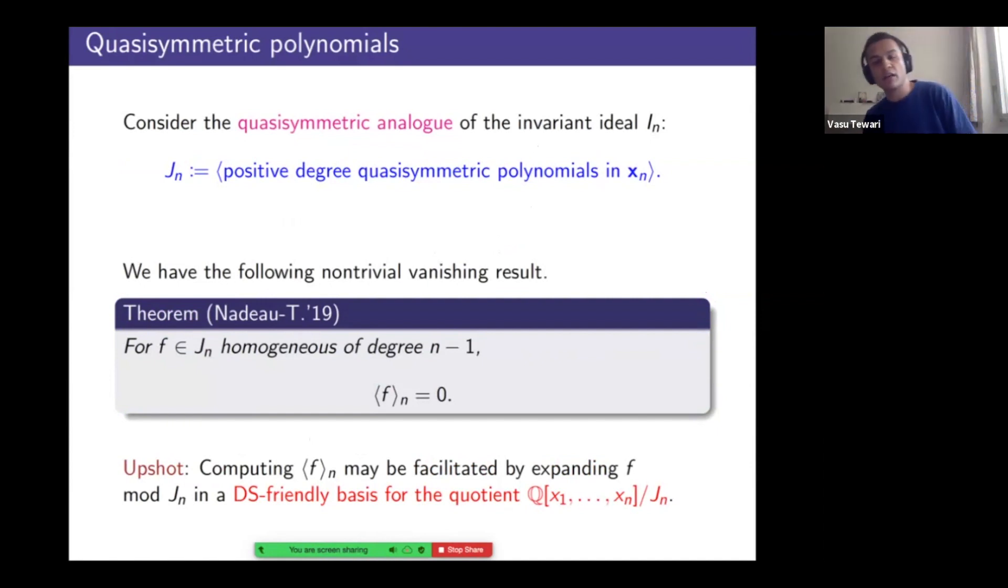Okay. Right. So I'm going to consider the quasi-symmetric analog of the invariant ideal i_n. So this is going to be the ideal j_n generated by positive degree quasi-symmetric polynomials in x1 to xn. And this was studied by Jean-Christophe Aval, Nontel and François Bergeron. And what you have is that the vanishing result from i_n actually can be pushed further. And this takes a couple of pages. So this is not as easy as putting facts two and three together from before. So degree n minus one homogeneous polynomials that lie in this ideal gets you zero upon divided symmetrization.